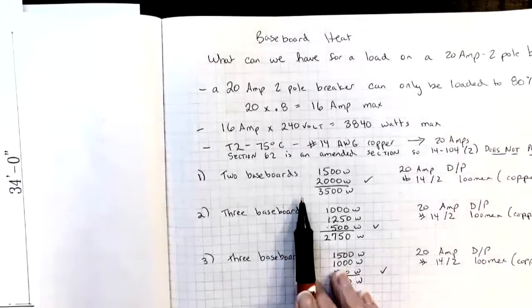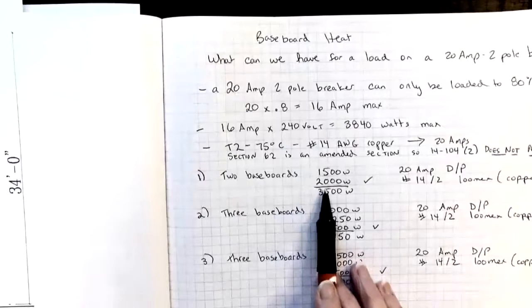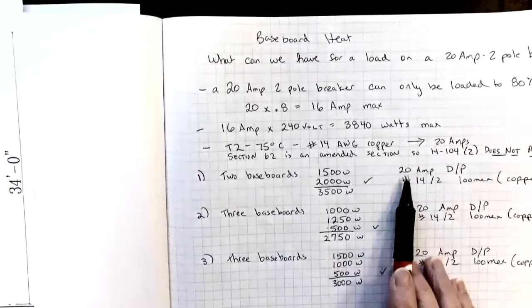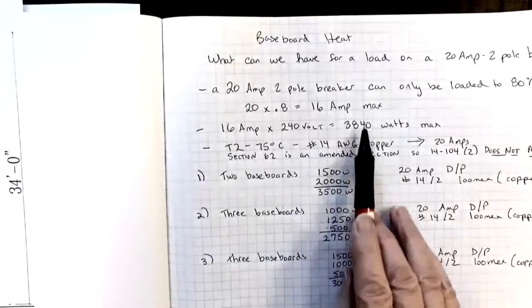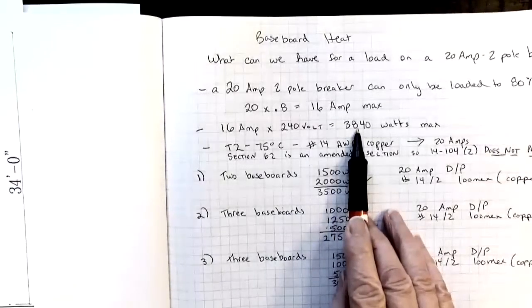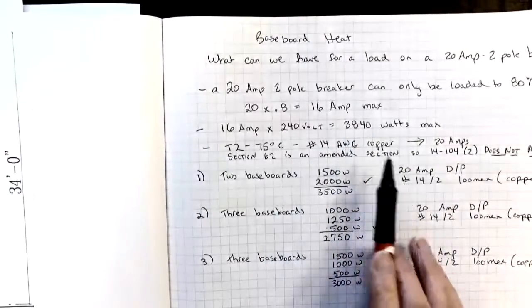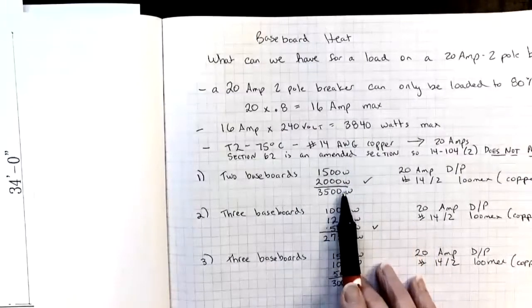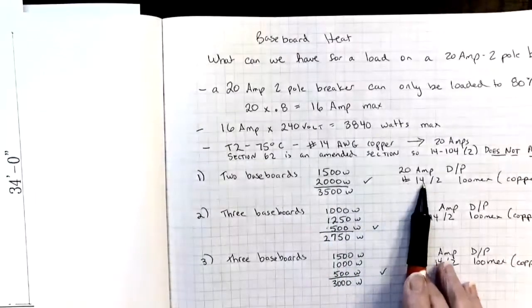Now in the two bedroom house, I had two baseboards in the living room, a 1500 watt and a 2000 watt. So using the rules that we just looked at, when I take 3500 watts and look at it, it fits within our maximum for a 20 amp breaker. So I can use the 20 amp breaker. Also from table two, the wire is good for 20 amps. And so when I divide this out, I end up with less than 20 amps. And so the 14-2 Lumex is fine.